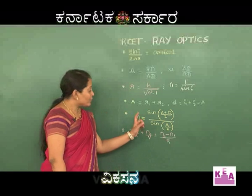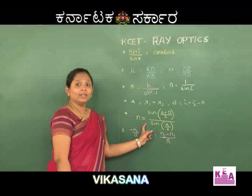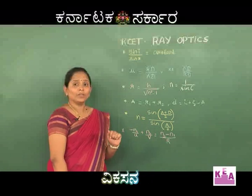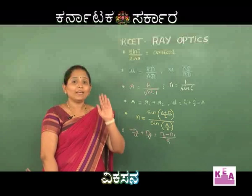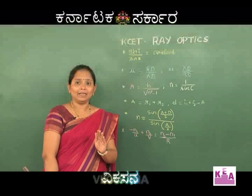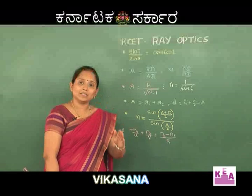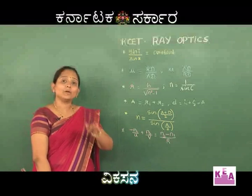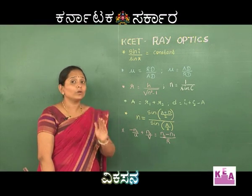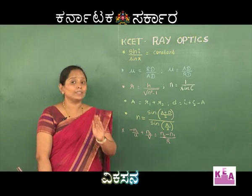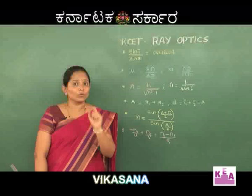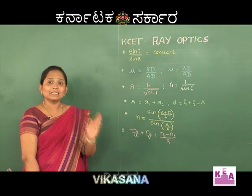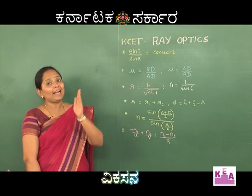There is one important concept regarding the refractive index and the angle of prism. If the angle of prism is equal to the critical angle, then the ray will be grazing the surface. If the angle of the prism is greater than twice the critical angle, total internal reflection will take place. So the angle of prism should lie between the critical angle c and 2c.